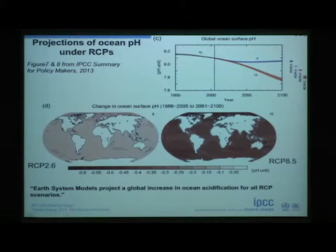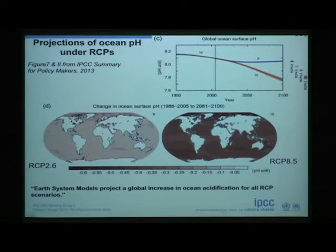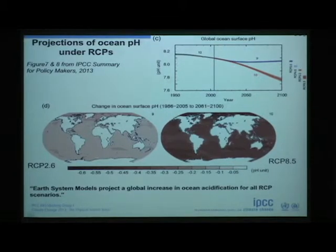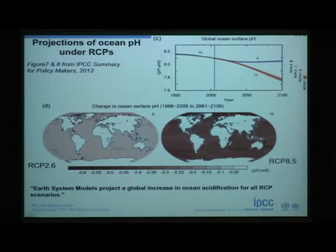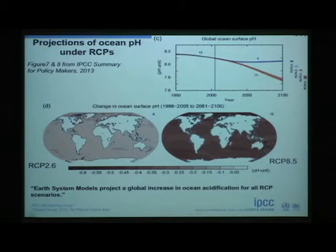Acidification: the oceans are going to continue to acidify as more carbon dioxide is put into the atmosphere because they will still be able to absorb CO2. These are for the two RCP values. Here's where we are right now, and even with the reduced scenario, it will continue to acidify for at least the next 10 to 20 years, then may stabilize. If we continue putting carbon dioxide at the rate we are now, it will continue to go down even further. The patterns and maps show that while there is some relative distribution, it is very global — most places are going to be acidifying at roughly the same level.